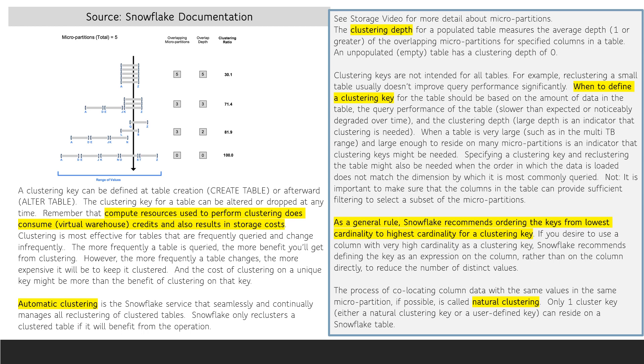Only one cluster key — either a natural clustering key or a user-defined key — can reside on a Snowflake table.